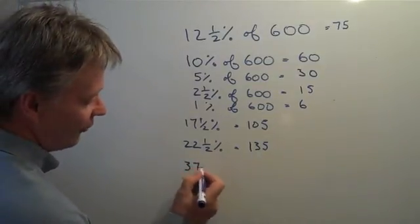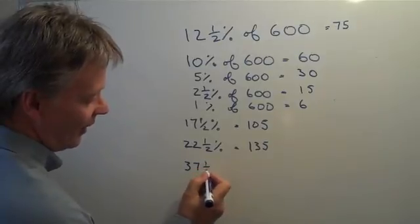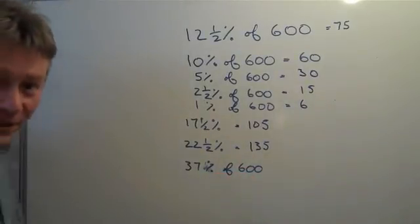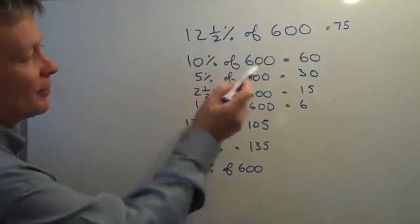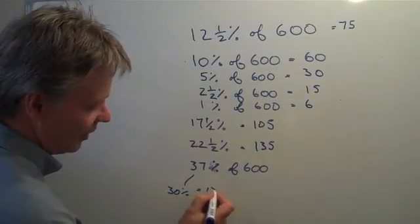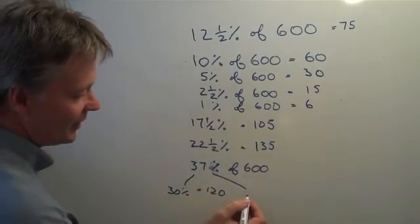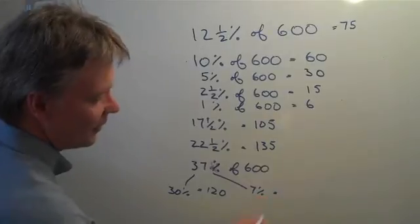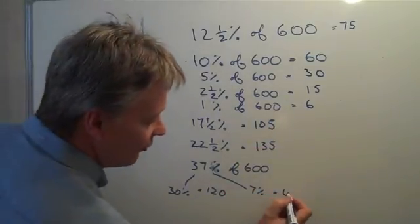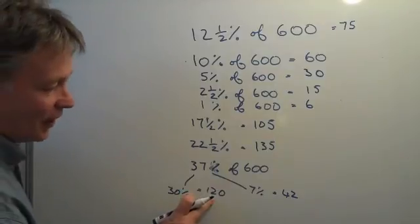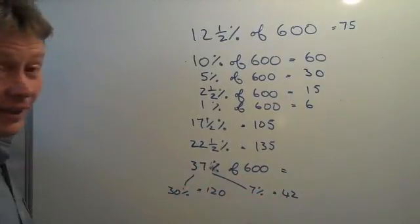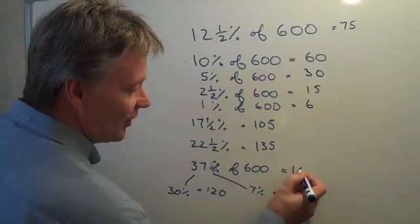Let's say we wanted to calculate 37% of 600. So 37% of 600 is going to be 3 lots of 10%, which is 120, so 30% equals 120. And then 7% is going to be equal to 7 lots of 1%, so 7 times 6 is 42. And if I add those 2 together, I've got 120 plus 42, which is 162, so 37% of 600 is 162.